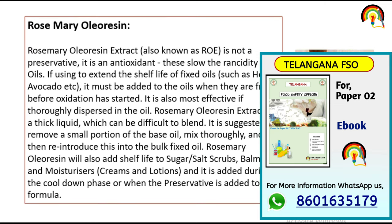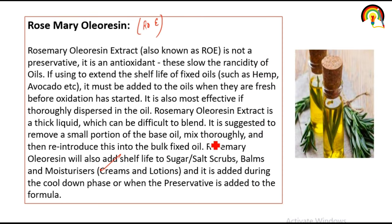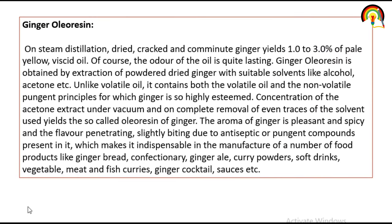Rosemary oleoresin, also called ROE, acts as an antioxidant. To extend the shelf life of fixed oils, it must be added when the oils are fresh, before oxidation has started. It is a thick liquid which can be difficult to blend; it is suggested to mix a small portion with base oil thoroughly, then reintroduce it into the bulk fixed oil. It is mainly used in creams and lotions, as well as salt scrubs, and is added during the cool-down phase or when the preservative is added to the formula.